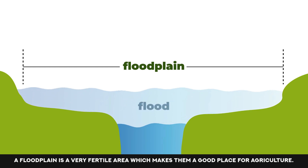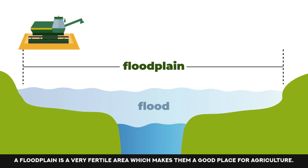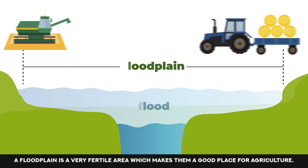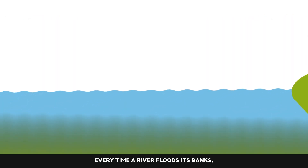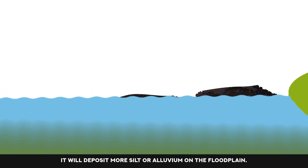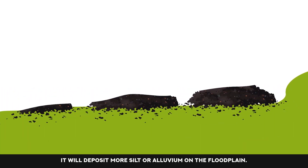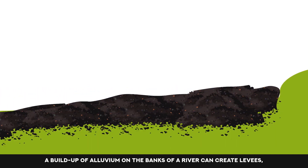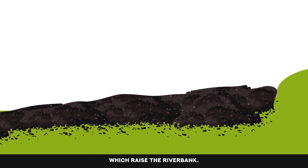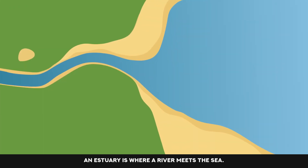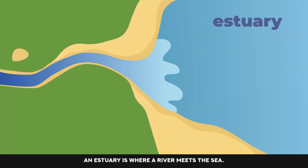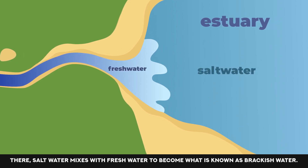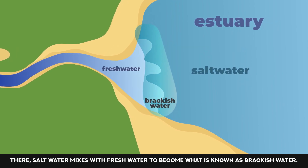A floodplain is a very fertile area which makes them a good place for agriculture. Every time a river floods its banks, it will deposit more silt or alluvium on the floodplain. A build-up of alluvium on the banks of a river can create levees which raise the riverbank. An estuary is where a river meets the sea. There, salt water mixes with fresh water to become what is known as brackish water.